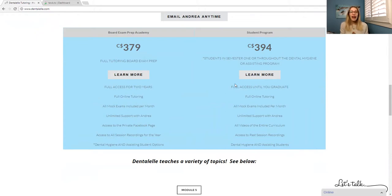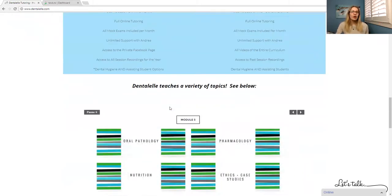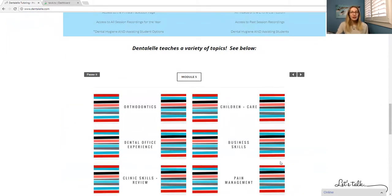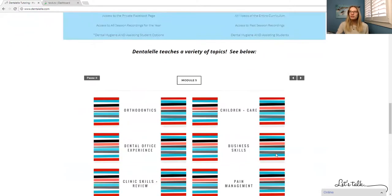You have full access to everything at any time. So for the board exam prep academy, you have full access until you pass the exam. Pretty easy, right? And then for the student program, you have full access until you're done school. Easy again. So there's no ifs, ands, ors, or buts. You have full access to everything, anytime, all the time. And the modules, you guys, there are a ton of modules. So you will learn a little bit of everything because that's the whole point, right?